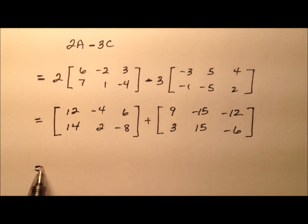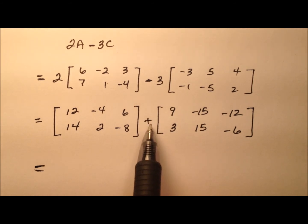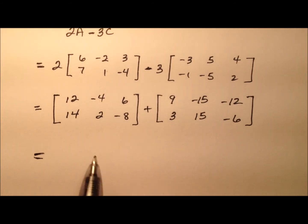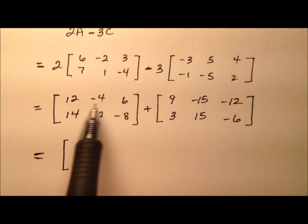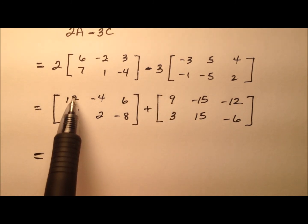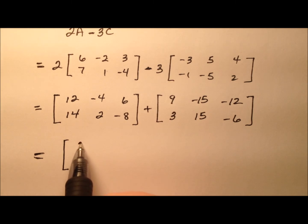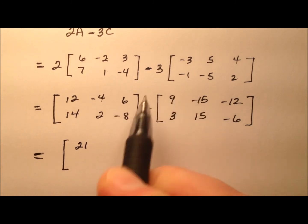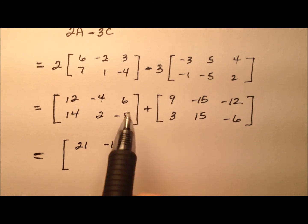So, that's what we have here, and now it's time to go ahead and just add these 2 matrices together. We'll do so by combining or adding these corresponding entries. So, the 12 and the 9 will make 21. The negative 4 and the negative 15 will make negative 19.